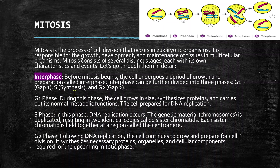Before mitosis, the cell undergoes a period of growth and preparation called interphase. Interphase can be further divided into three phases: G1, also known as Gap 1; S, which is Synthesis; and G2, which is Gap 2.